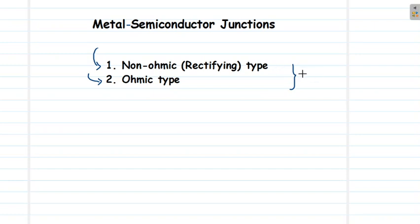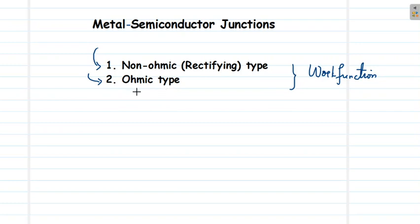The junction type depends on the work function of the metal and the semiconductor. In a non-ohmic type junction, Ohm's law will not be satisfied and these junctions can act like a rectifier. In an ohmic type junction, Ohm's law will be satisfied. In this video we will look into the non-ohmic type of metal-semiconductor junction.